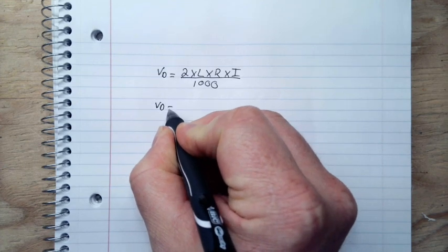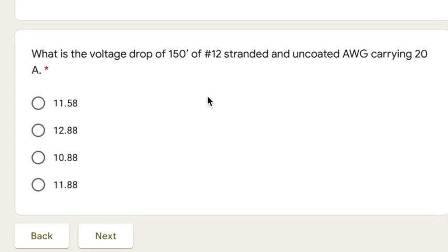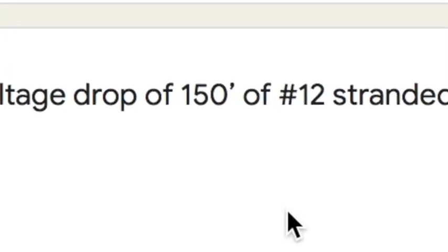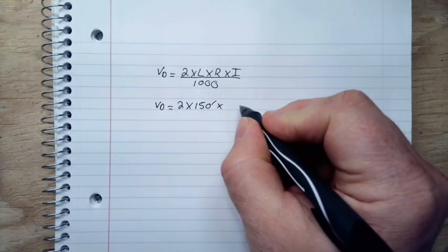Voltage drop is equal to 2 times the length. So the length we said was 150 feet times the resistance. I don't know the resistance yet, we'll look that up in one second, so I'm just going to leave a spot there.